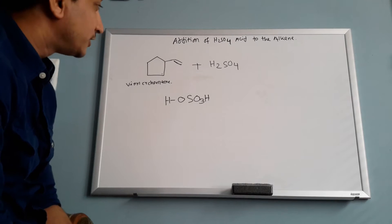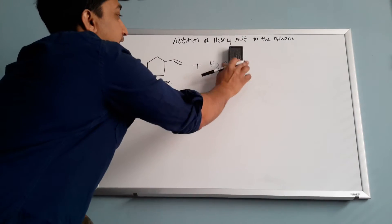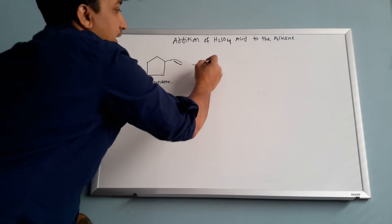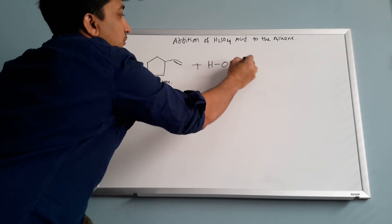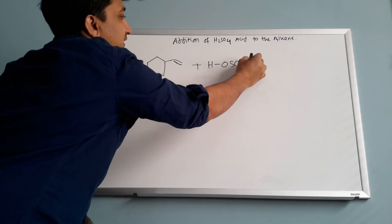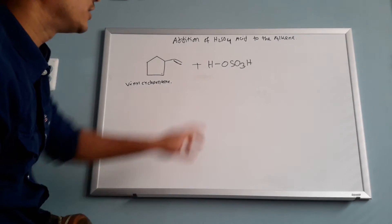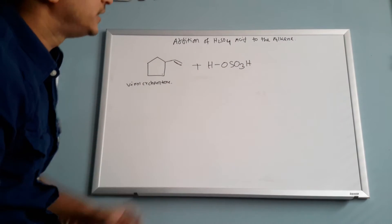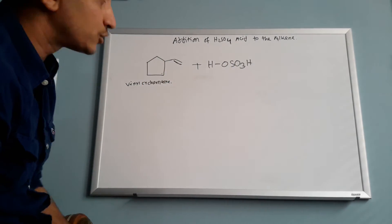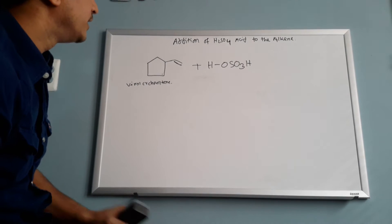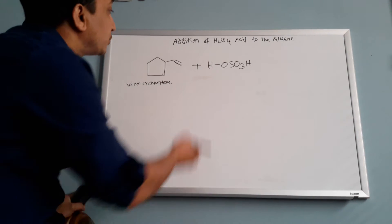I'll show you here. Instead of the condensed form, write it as HOSO3H. Sulfuric acid has 2 hydrogens, 4 oxygens, and 1 sulfur — so the expanded structure looks like that.